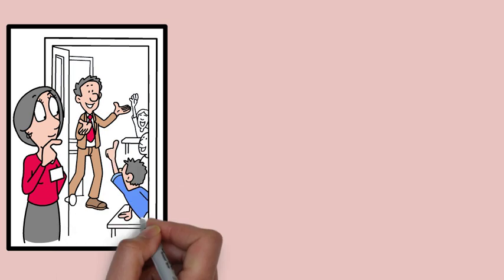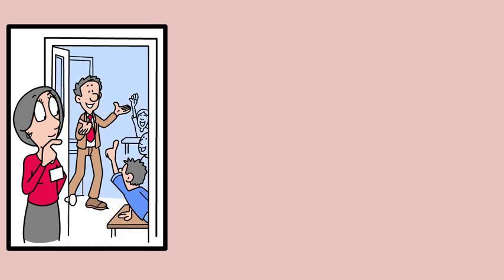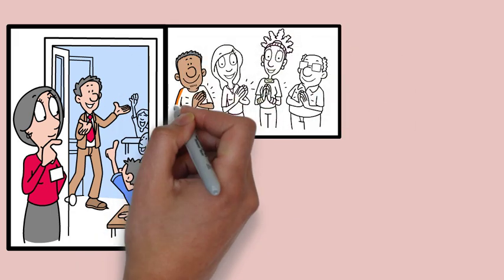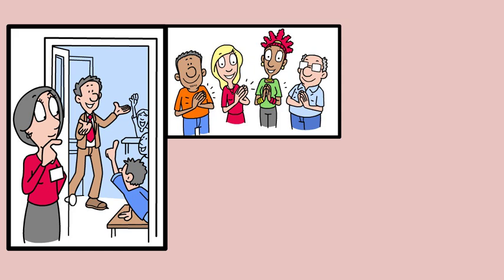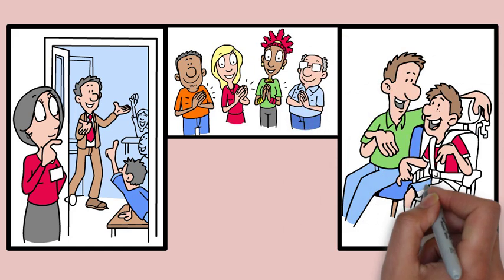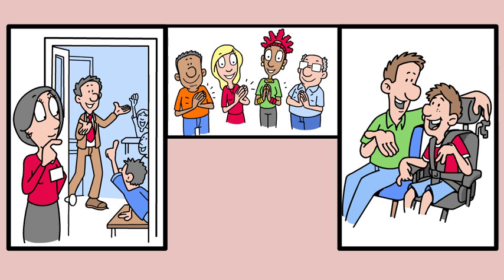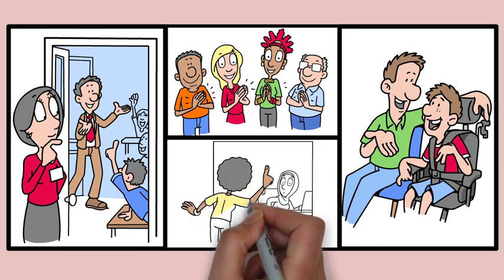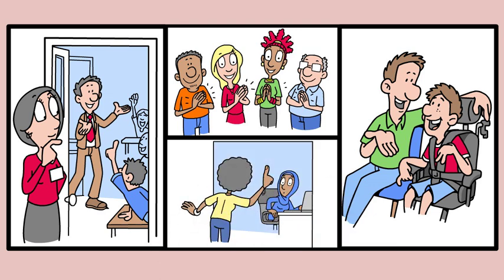Educators can use this theory to create supportive learning environments by considering how various systems interact. Schools that work closely with families and communities can better support students' overall development and address their needs more effectively. Similarly, parents can use this theory by actively engaging in their child's microsystems — maintaining open communication with teachers and participating in community activities can enhance the child's development.